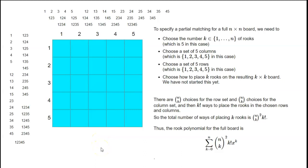Suppose we want to work out the coefficient of x cubed. The coefficient of x cubed is the number of ways of placing three non-challenging rooks on this 5 by 5 board.